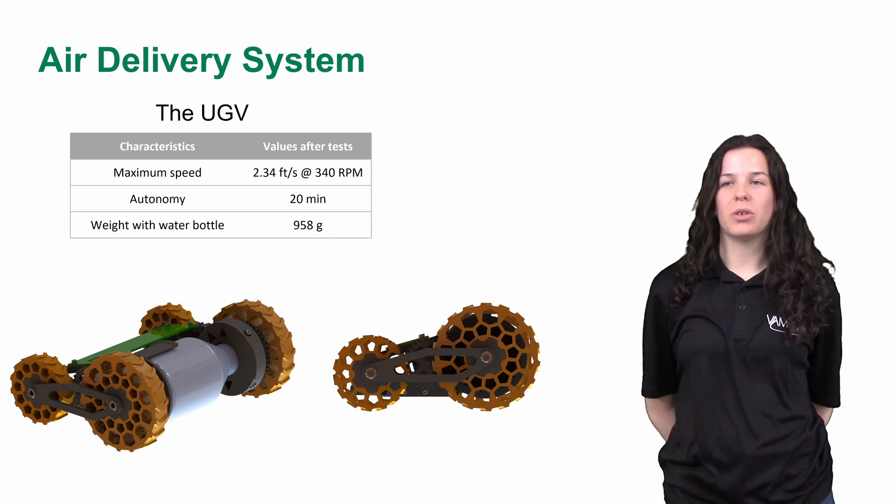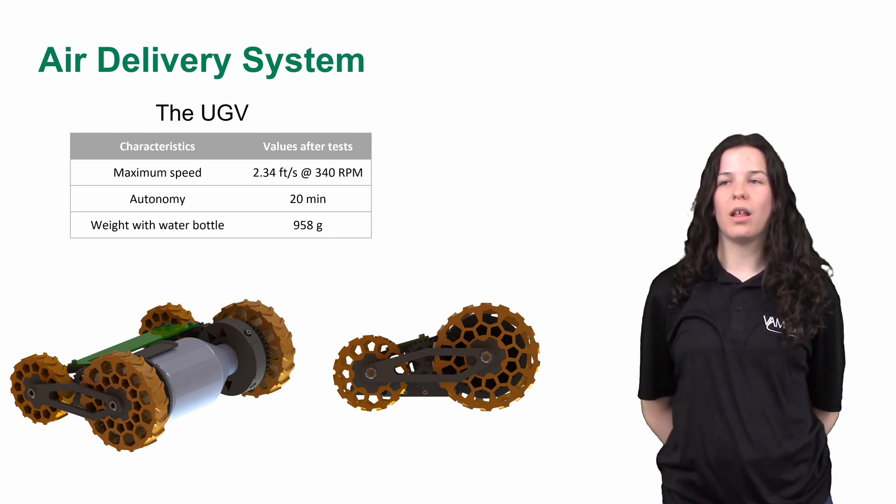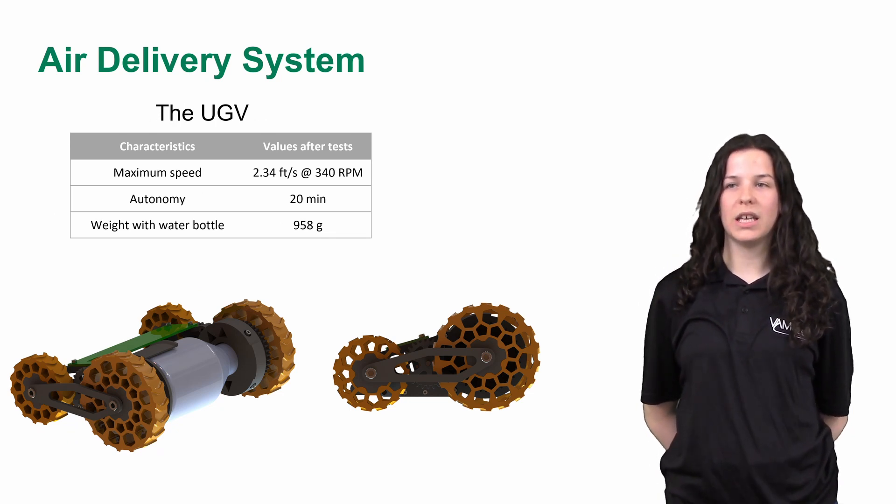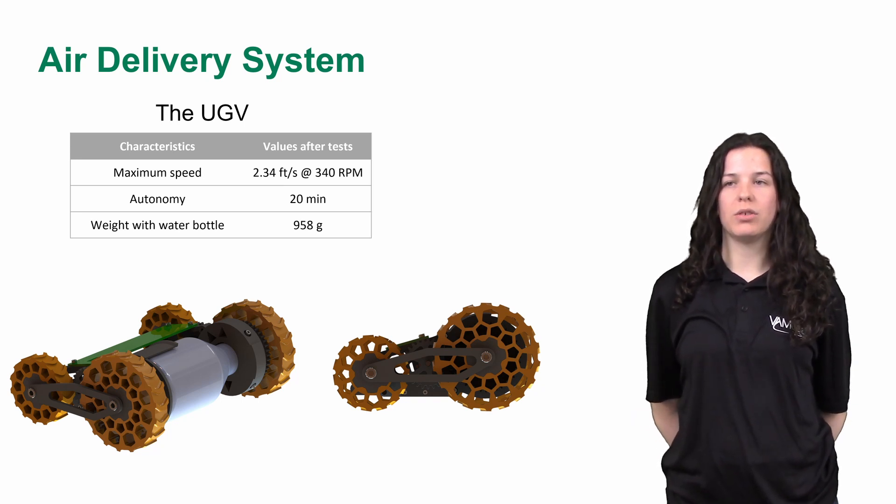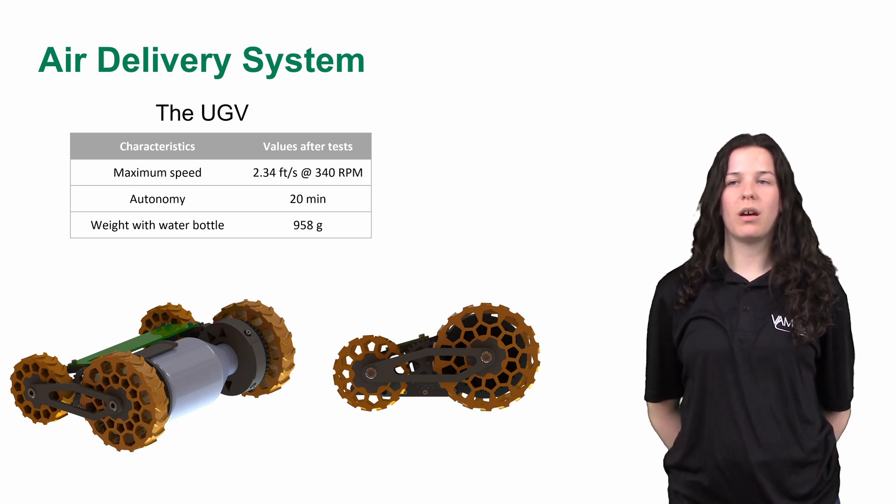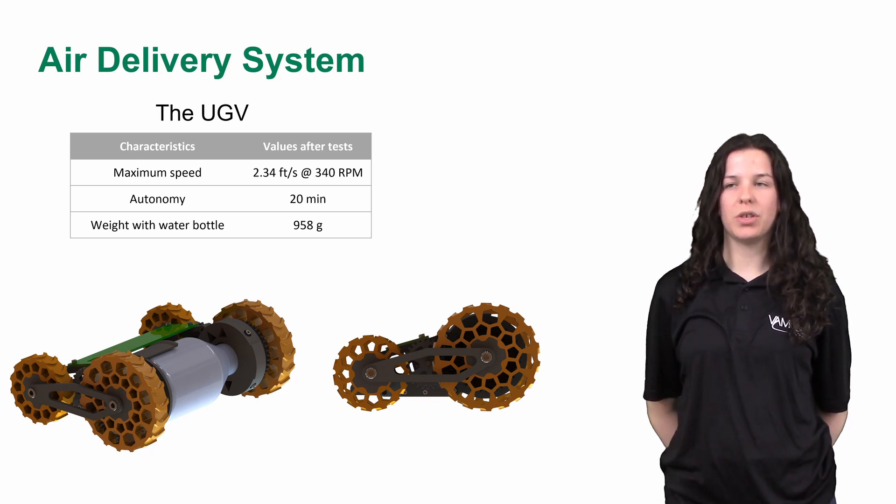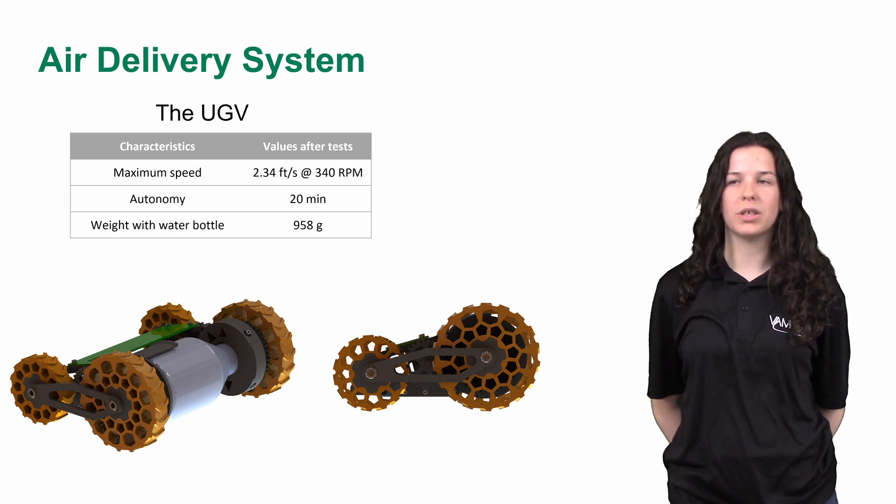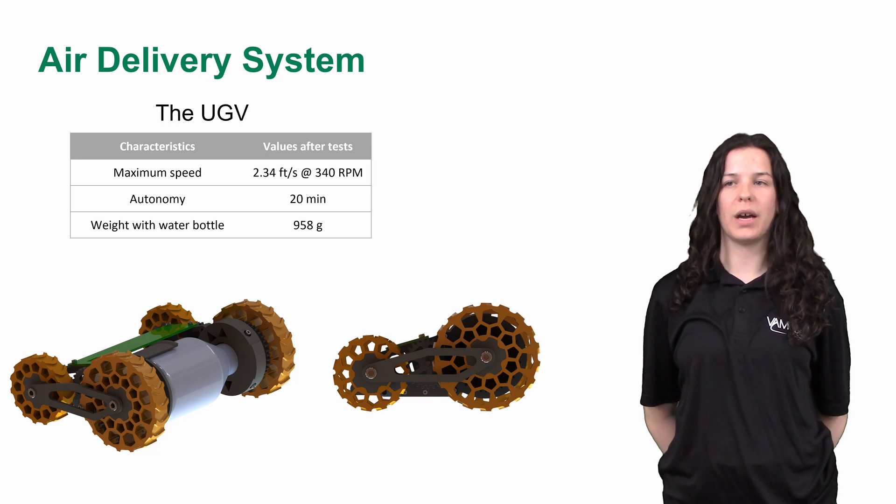The UGV is the one that will transport the water bottle during all the missions. As described previously, it will be delivered from the UAV by a winch. Once released on the ground, the UGV is capable of moving to a different target. It is equipped with all the necessary components and telemetry to achieve the task. The UGV has a special design giving us the opportunity to transport a water bottle while being the most compact.